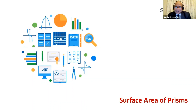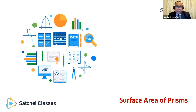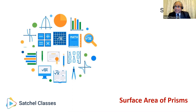So welcome to the session on surface area of 3D shapes. What are we going to learn in this session? First, we'll try and understand what we mean by surface area of any 3D shape. Then we'll understand what are the components of surface area — which components make up the surface area of any 3D shape. And finally, we'll devise a formula to calculate surface area of any prism. Let's get started.